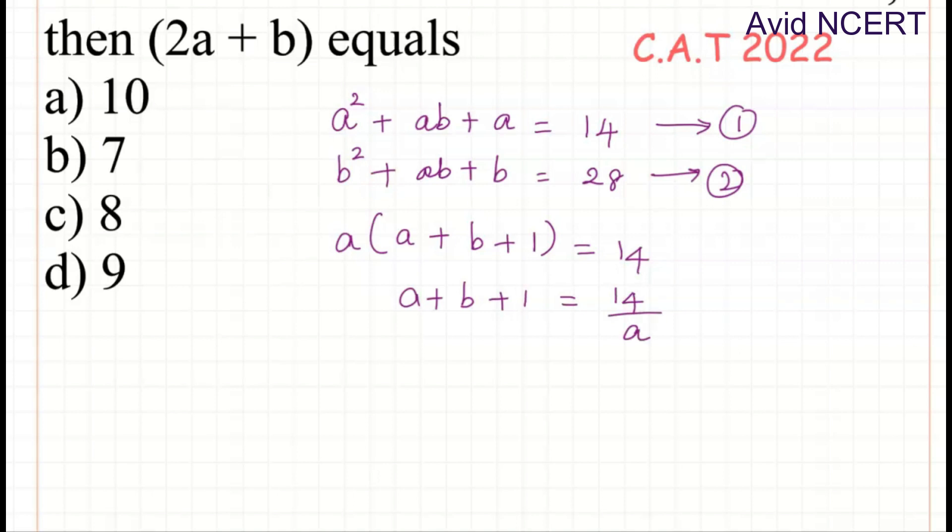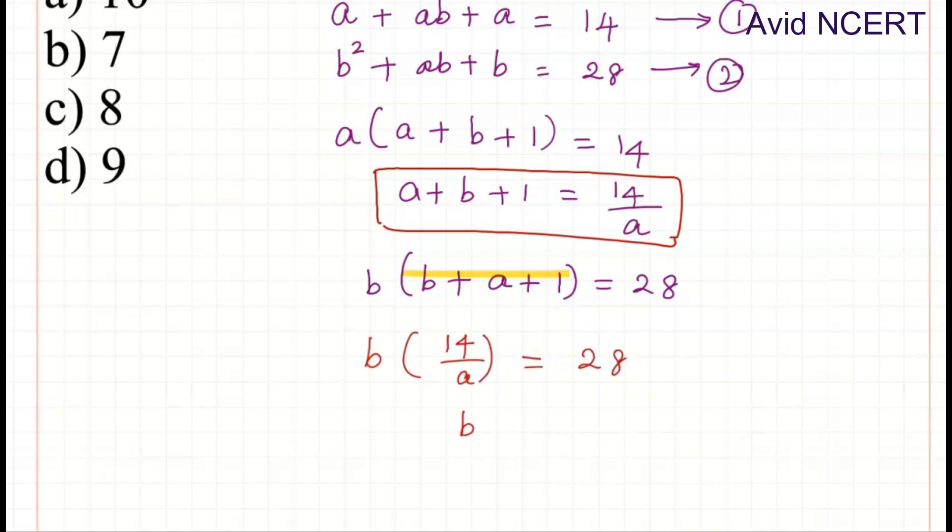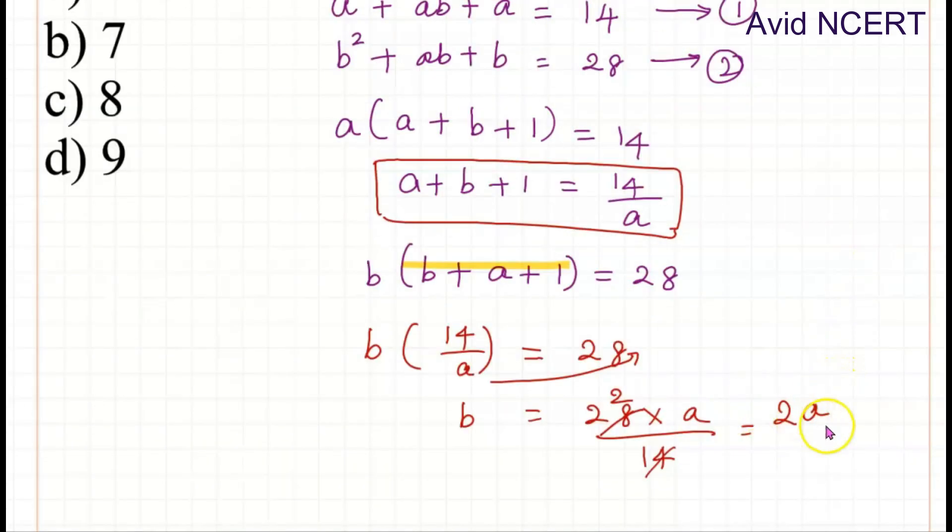The second equation can be rearranged as B(B + A + 1) equals 28. From this we know A + B + 1 equals 14/A which can be substituted in this, which is B(14/A) equals 28, where B equals 28A/14, which equals 2A. So B equals 2A.